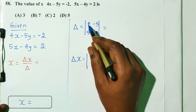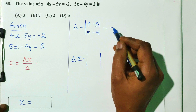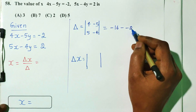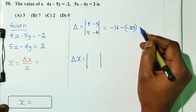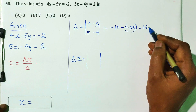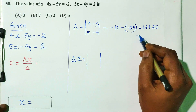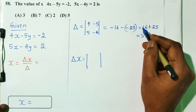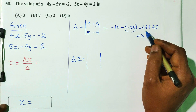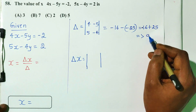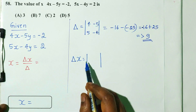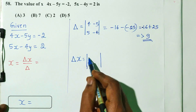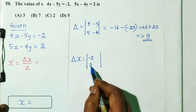Calculating delta: 4 into minus 4 gives minus 16, and minus 5 into 5 is minus 25 — but the formula gives minus 16 minus of minus 25, so minus 16 plus 25 equals 9. For delta x, we replace the x-column with constants: minus 2, 2, with y-coefficients minus 5, minus 4.